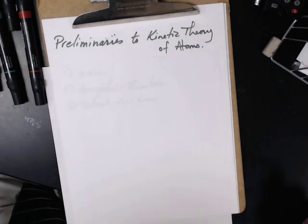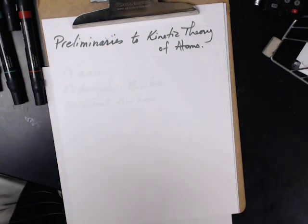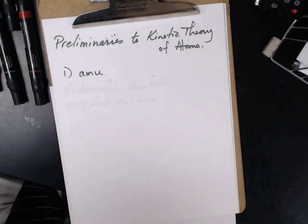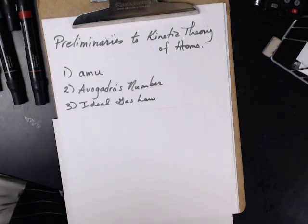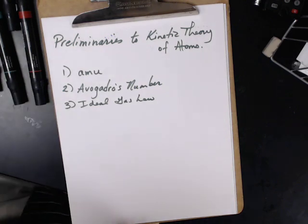Before we get into kinetic theory of atoms, we need to cover some preliminaries. The first one being AMU, Avogadro's number, and ideal gas laws. Let's start at the very beginning.